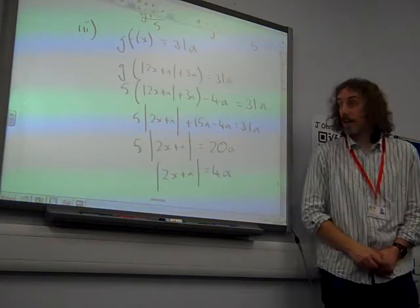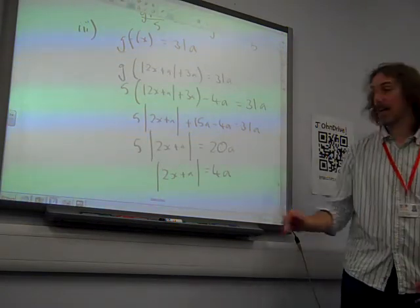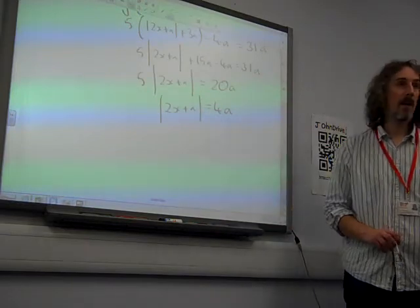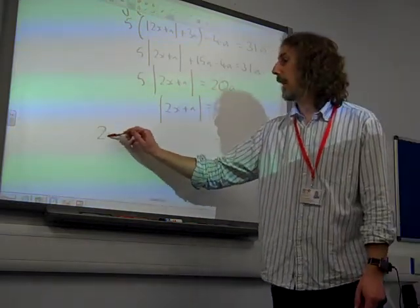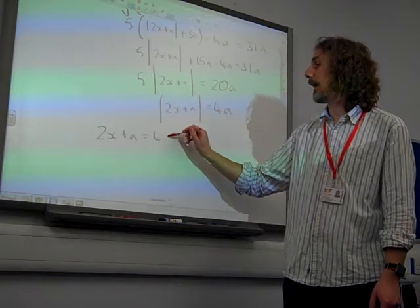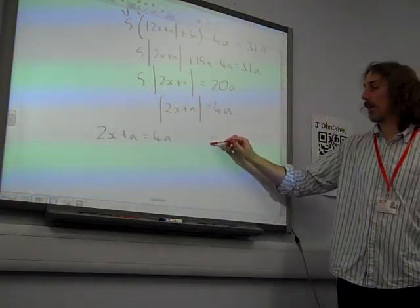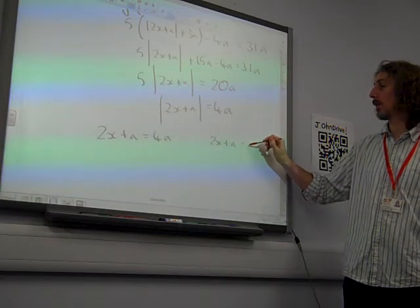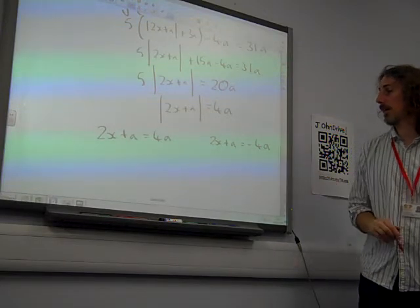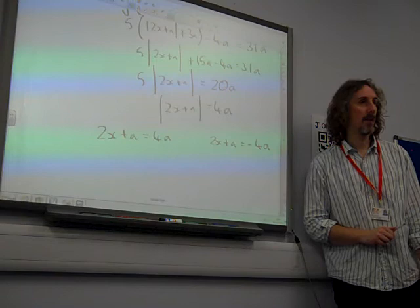That's just a standard modulus equation. We've got a hanging around in there, but it's still the kind that we would say 2x plus a could be equal to 4a. Or the minus of 2x plus a could be equal to 4a. I'm going to write 2x plus a could be minus 4a and do it that way.